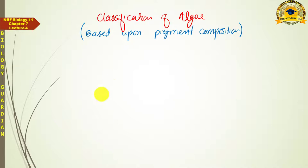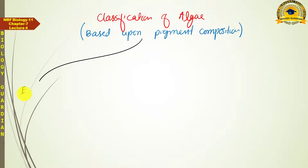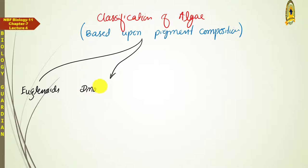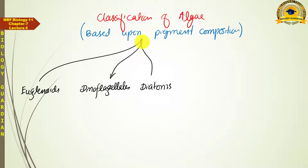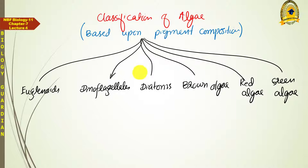Based on pigment composition, algae are classified into six different groups: Euglenophyta (euglenoids), Dinoflagellates (Pyrrophyta), Diatoms (Chrysophyta), Brown algae (Phaeophyta), Red algae (Rhodophyta), and Green algae (Chlorophyta).